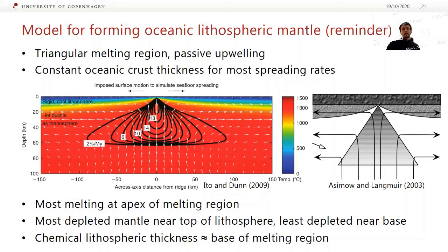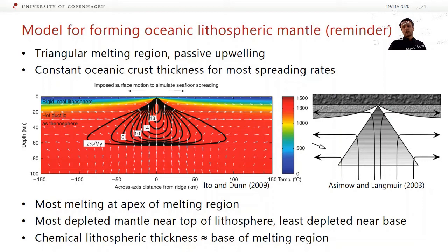As you have upwelling, the most intense melting and the most depleted mantle sample should be at the apex of the melting region — right at the top underneath the crust is where you should have the most depletion. Near the base, you're only getting a little bit of upwelling and a little bit of melting, so the mantle shouldn't be quite as depleted. In this case, the chemical lithospheric thickness will be approximately the same as the base of the melting region — in this model from Ito and Dunn, that corresponds to a depth of about 60 kilometers or so.